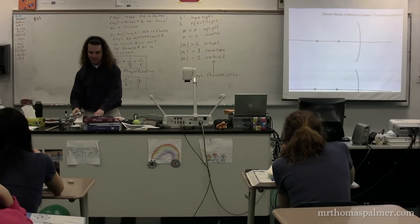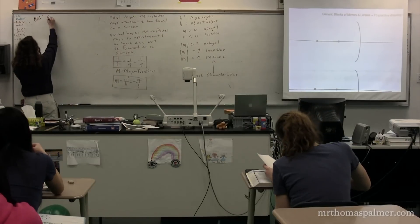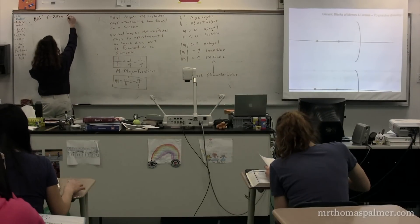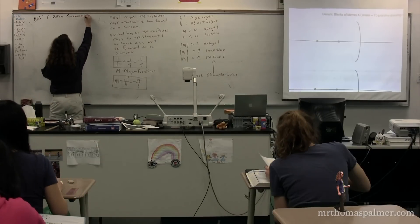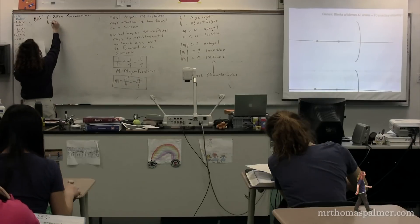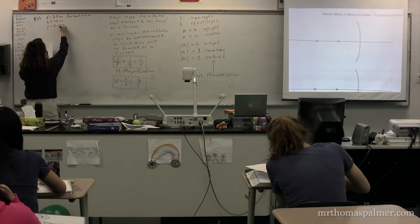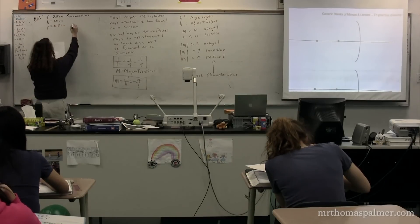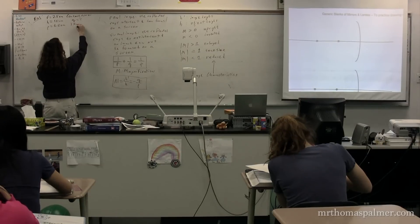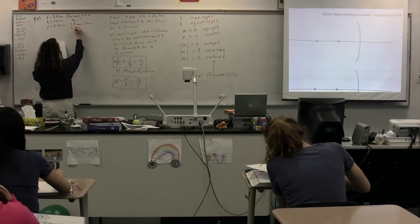In our example, the focal length of the mirror is going to be 2.5 centimeters. We're going to have a concave mirror. The object height is going to be 1.5 centimeters, and the object distance is going to be 6.5 centimeters. We're going to solve for the image distance, the three image characteristics, and the image height.